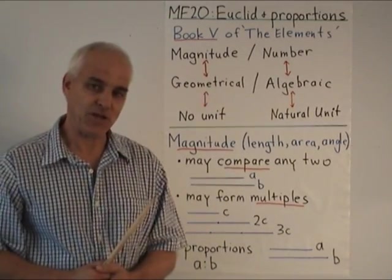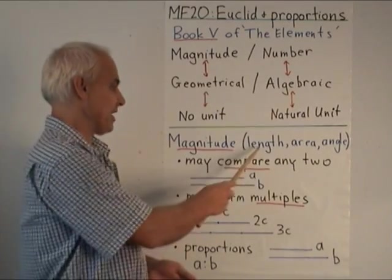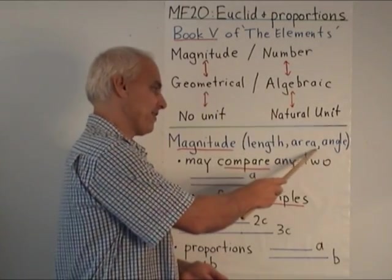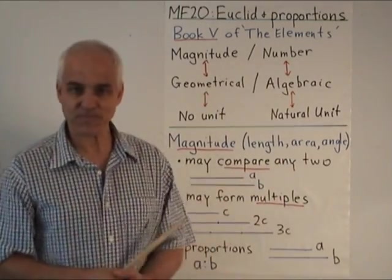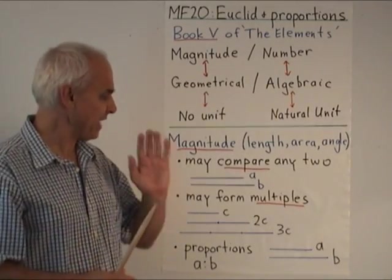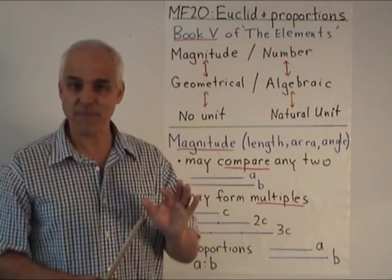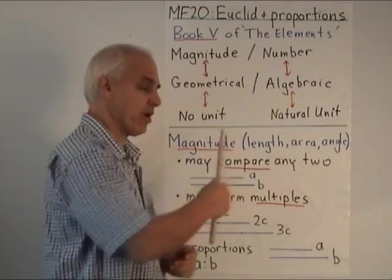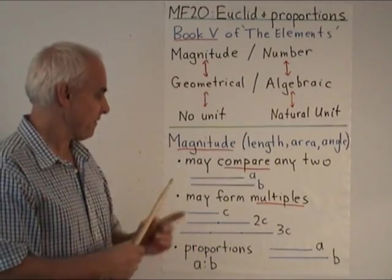The kinds of magnitudes that Euclid was interested in were things like length, and area, angle, and volume. And the ancient Greeks had some basic assumptions about these magnitudes that apply to any one of these situations. First of all,